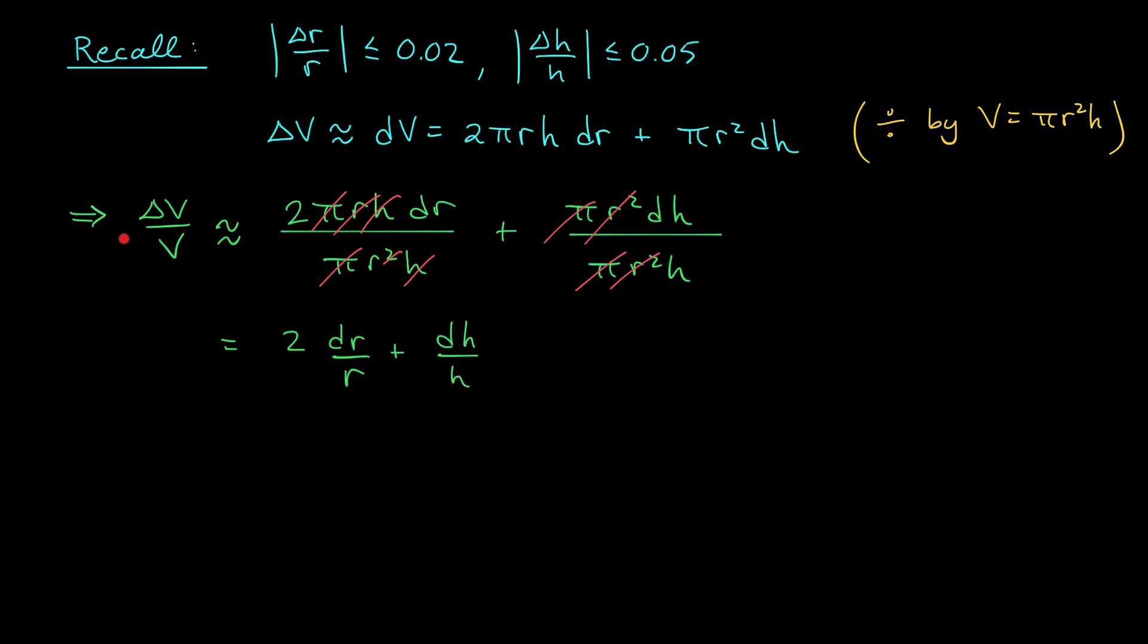At this point, we're ready to wrap up the problem. We're ready to estimate this quantity in absolute value. To see why, notice that on the right hand side we have 2 dr over r plus dh over h. When the changes in r and h are really small, delta r and dr, they're the same thing. Delta h and dh, they're the same thing. So I could write this as 2 delta r over r plus delta h over h. And you see, we have estimates on these two quantities. So what I'm going to do is apply the absolute value to both sides of this expression, and see if I can use these estimates to say something about delta V over V.